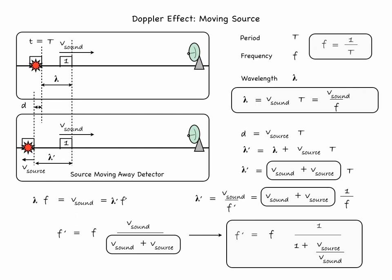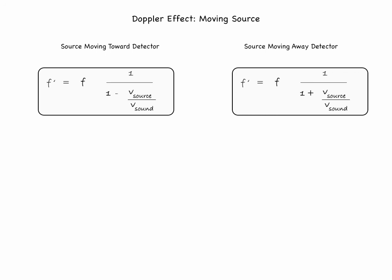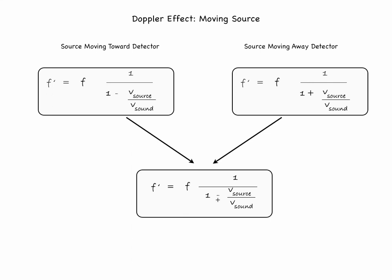The frequency of the wave detected will be modified from the original frequency with which the wave is emitted by a certain factor. In the case of a source moving toward the detector, the factor is 1 over (1 minus v source over v sound). In the case of a source moving away from the detector, the factor is 1 over (1 plus v source over v sound). As both factors appear very similar in form, the formula can be combined into one: f prime equals f times 1 over (1 minus or plus v source over v sound), where minus gives the higher frequency for sources moving toward the detector and plus gives lower frequencies for sources moving away.